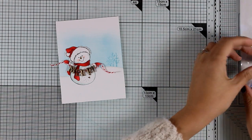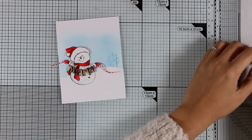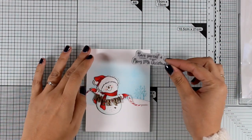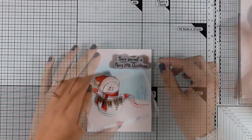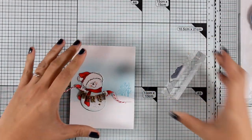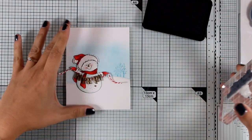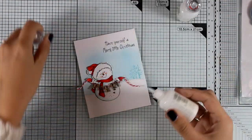I have placed the snowman temporarily on top of my card, and I'm going to bring in the sentiment and just try to decide where I want this to go. I'm going to stamp that with black ink at the top of my panel. Then I'm going to stick my snowman down with just a bit of white glue.